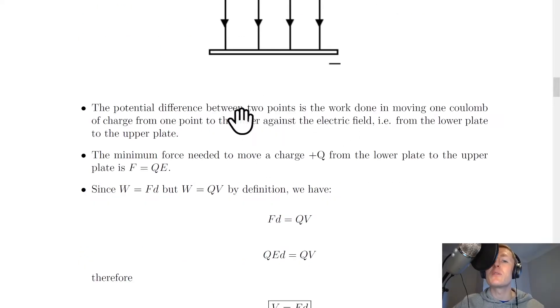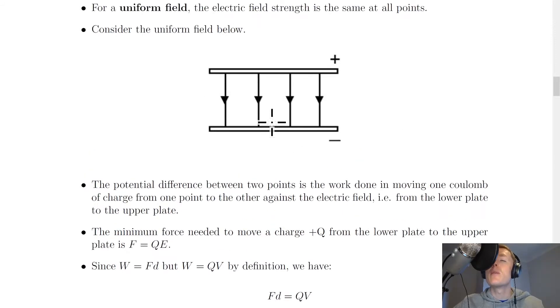We can say the potential difference between two points is the work done in moving one coulomb of charge from one point to the other against the electric field, i.e. from the lower plate to the upper plate. So remember we saw in the previous video that if we move a positive point charge against the electric field lines, then we have to do work to do that.